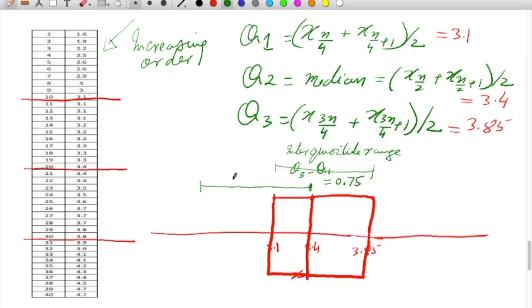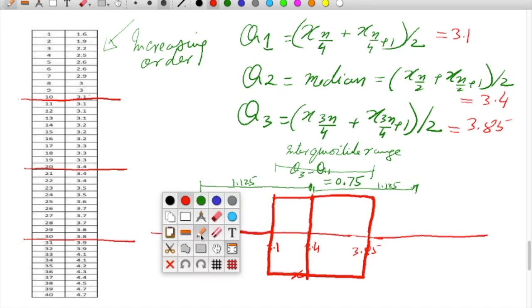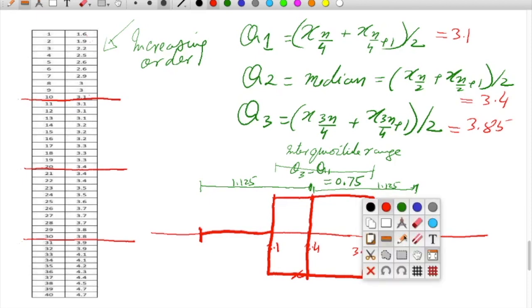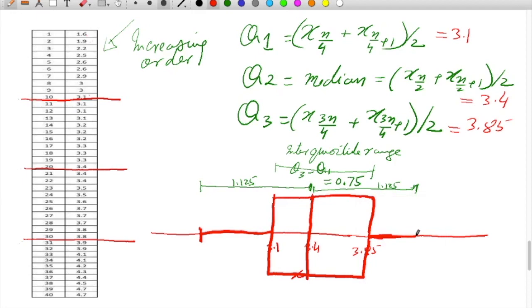And 1.5 times this on this side we will move, that is also 1.125. Then we move this way and we are here. This is called the range of the data as per whisker, or what we call box plot.